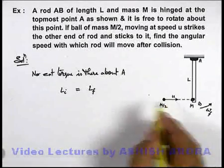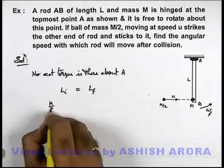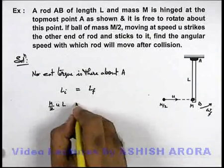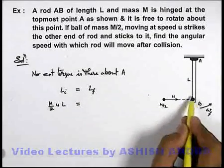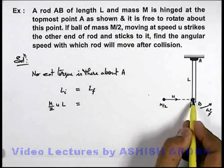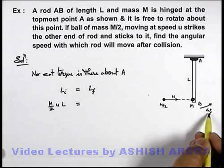So initially it is only due to the ball, which can be written as (M/2)uL. And after collision, as the system will become a single body, its angular momentum can be written as I omega.